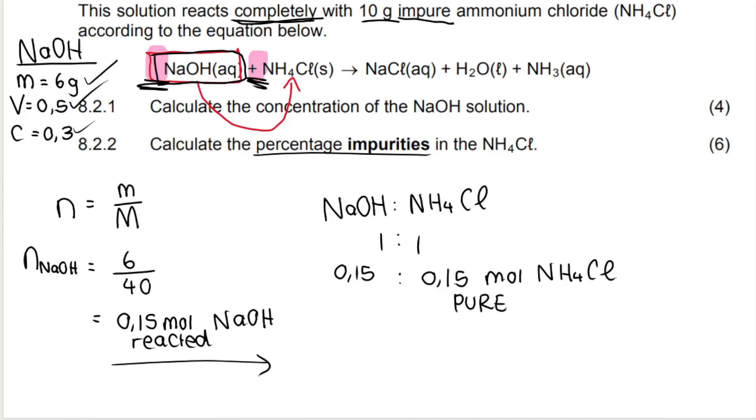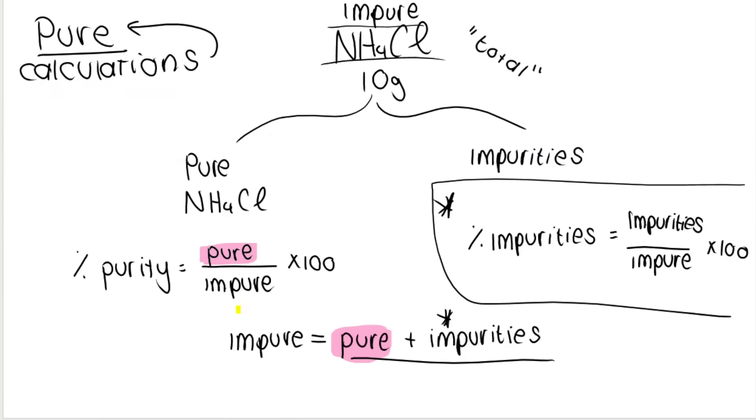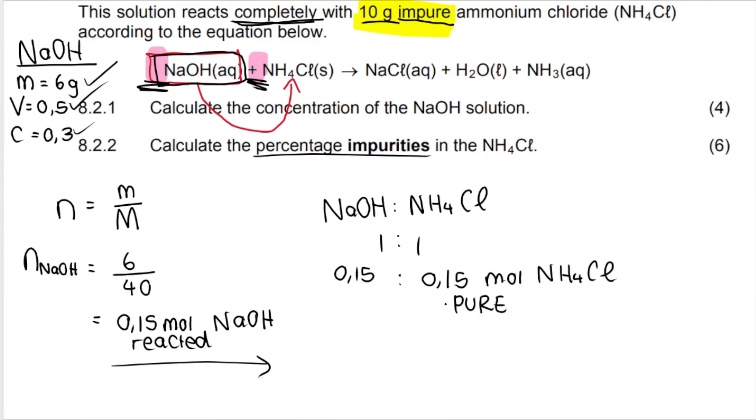Then remember, I'm trying to work out percentage impurities. And what do I know in the question? My total, my impure is 10 grams. So my impure, the bottom of my fraction is 10 grams. So I need to work out, I'm going to work in grams. If I know grams, impure grams at the bottom, then at the top of the fraction must also be in grams. So do you see that at the moment I have pure moles? I don't want moles. I want grams. So how do I convert this to mass in grams? I use the following formula.